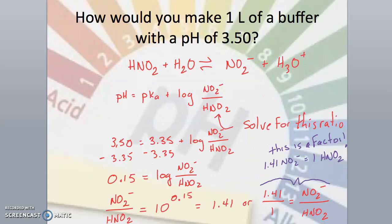I need to find a weak acid, or a conjugate acid of a weak base, that has a pKa close to 3.50. I'm going to use nitrous acid, HNO2, because the Ka is 4.5 times 10 to the negative 4. The negative log of the Ka gives us our pKa, which is 3.35.